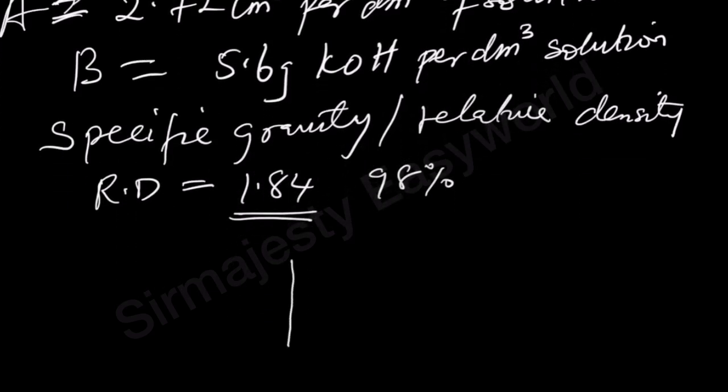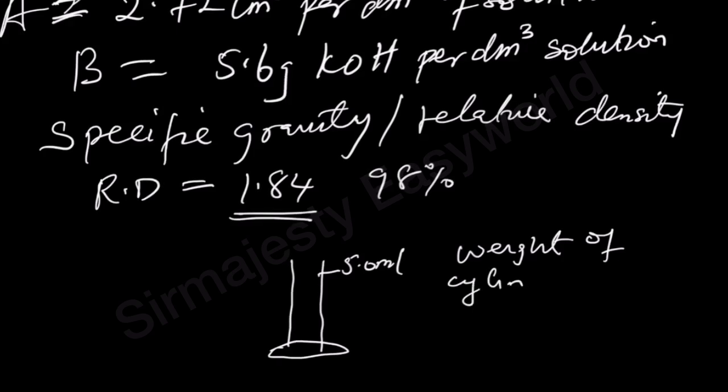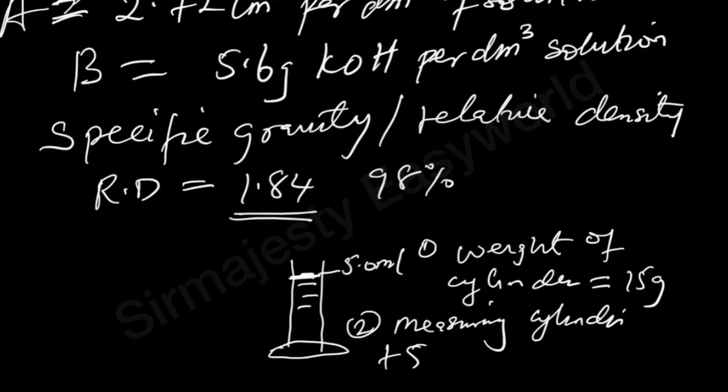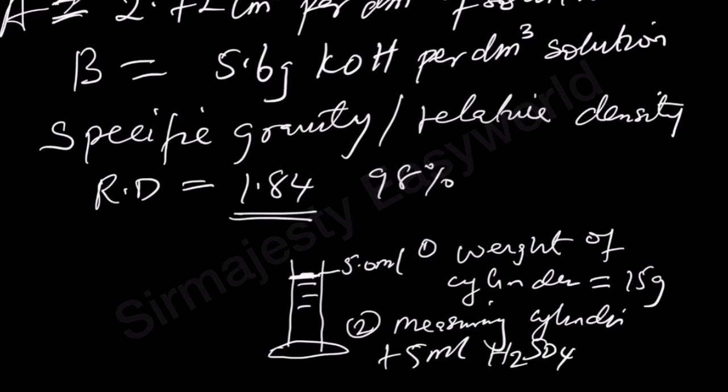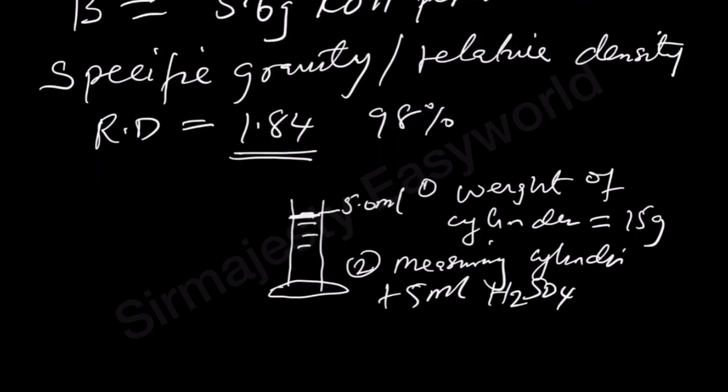You bring your weighing balance, bring a measuring cylinder, 10mm measuring cylinder. Maybe here is marked 10 or let's say 5.0mm measuring cylinder. The first step, you know the weight of the cylinder. Weight of the measuring cylinder. Let's assume that the weight of the measuring cylinder is found to be 15 grams. Then you fill it with the H2SO4 you have in the lab, the stock H2SO4.